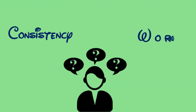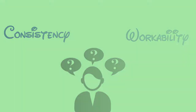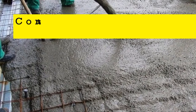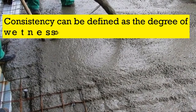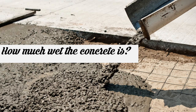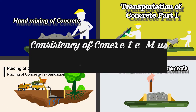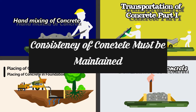Consistency and workability are often confused with one another. Consistency can be defined as the degree of wetness of concrete — meaning how much wet the concrete is. For effective handling, placing, and compacting the concrete, consistency must be maintained for every batch.